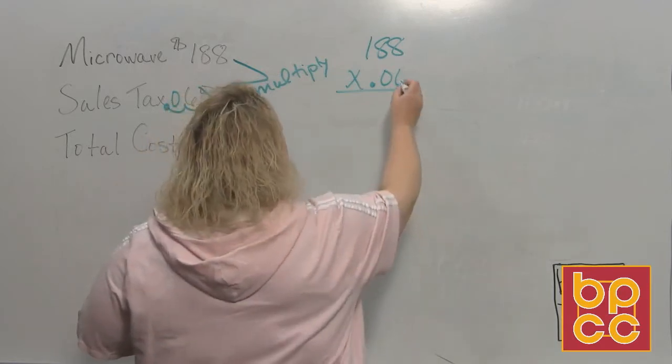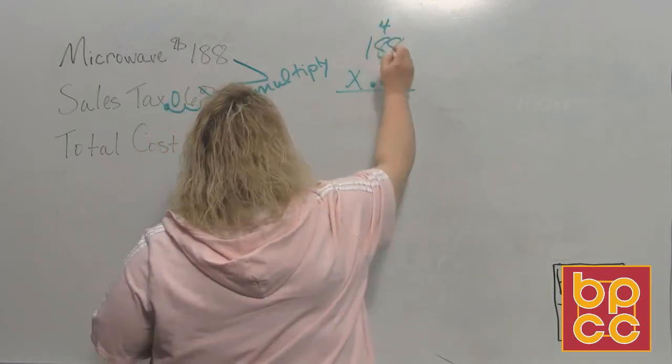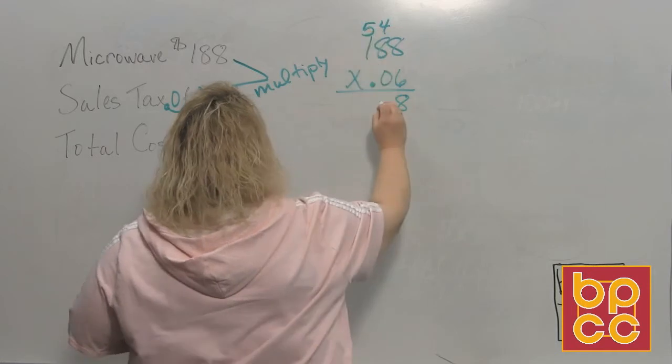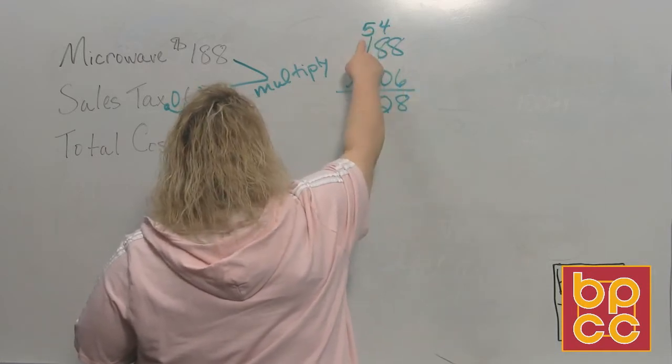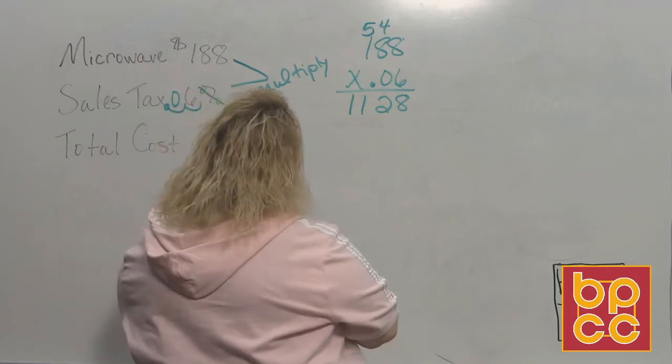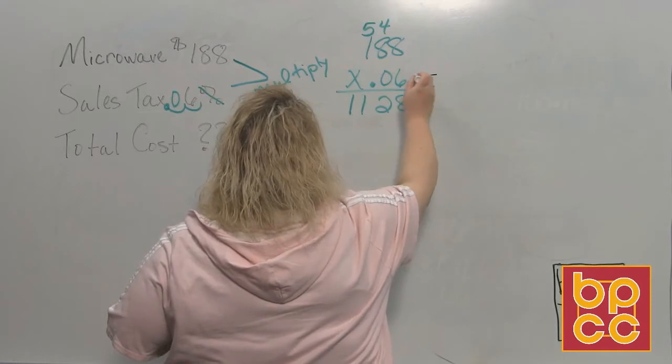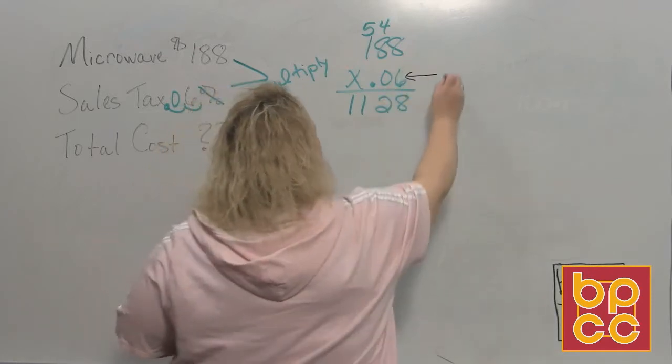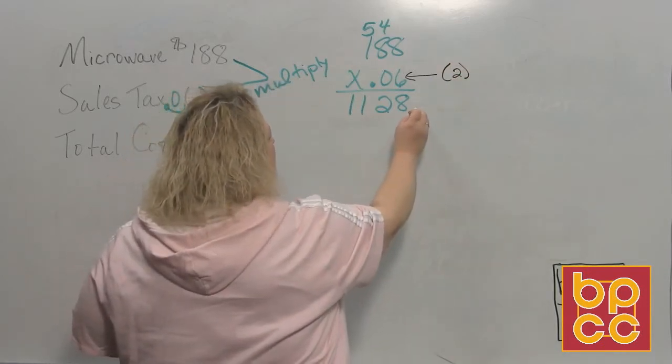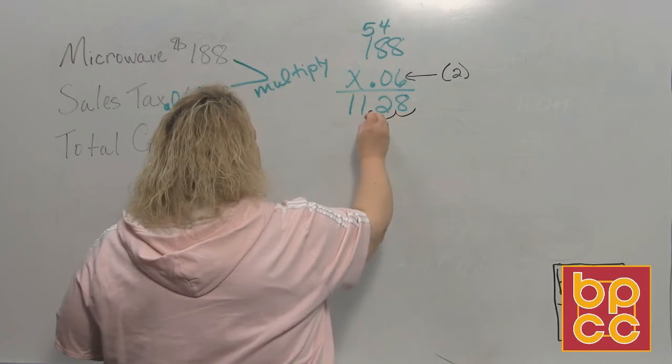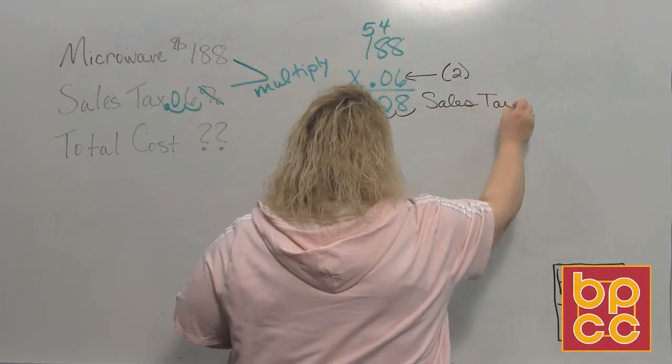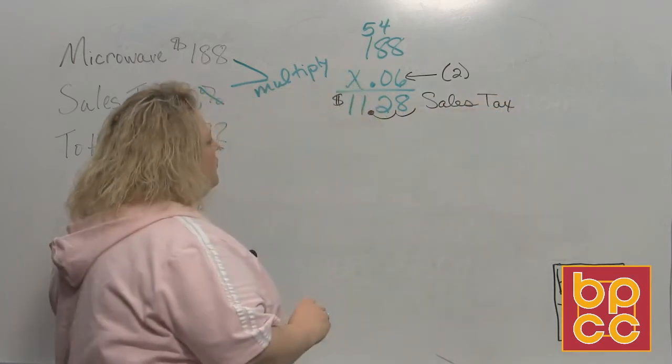So you take $188 times 0.06 because that's six hundredths because it's six out of a hundred and then you do the multiplication. So 6 times 8 would be 48. 6 times 8 is 48 and 48 plus 4 is 52. 6 times 1 is 6 plus 5 makes 11. And then remember, when you're going to count how many decimal places, you look at both of your numbers. The first number doesn't have any decimal places. The second number has two decimal places. So that's how many I have to move it over. So I go from the right to the left one, two spaces.